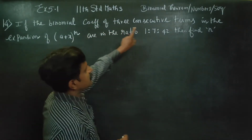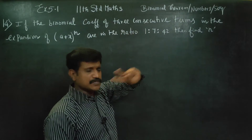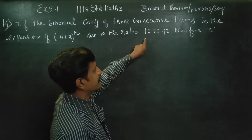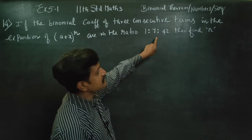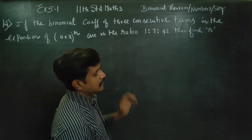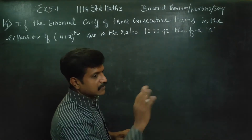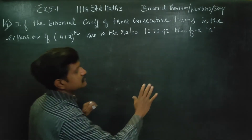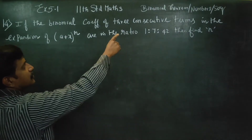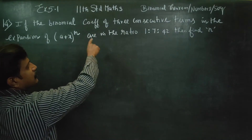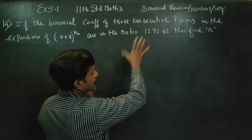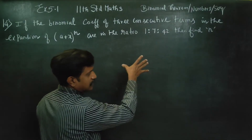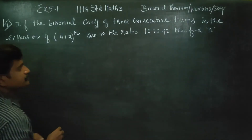The coefficient of 3 consecutive terms are in the ratio 1:7:42. You can take any 3 consecutive terms — say the first, second, and third — and fix those 3 consecutive terms. The ratio given is 1:7:42.